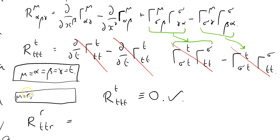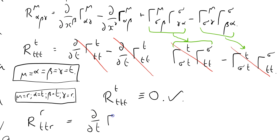Mu equals R, alpha equals T, beta equals T, gamma equals R. So what I'm going to do is write this formula down making these substitutions, leaving sigma free to sum over. It's d/dT of Christoffel(R, T, R) - I think that's non-zero, but we'll come back to that one - minus d/dR of Christoffel(R, T, T).